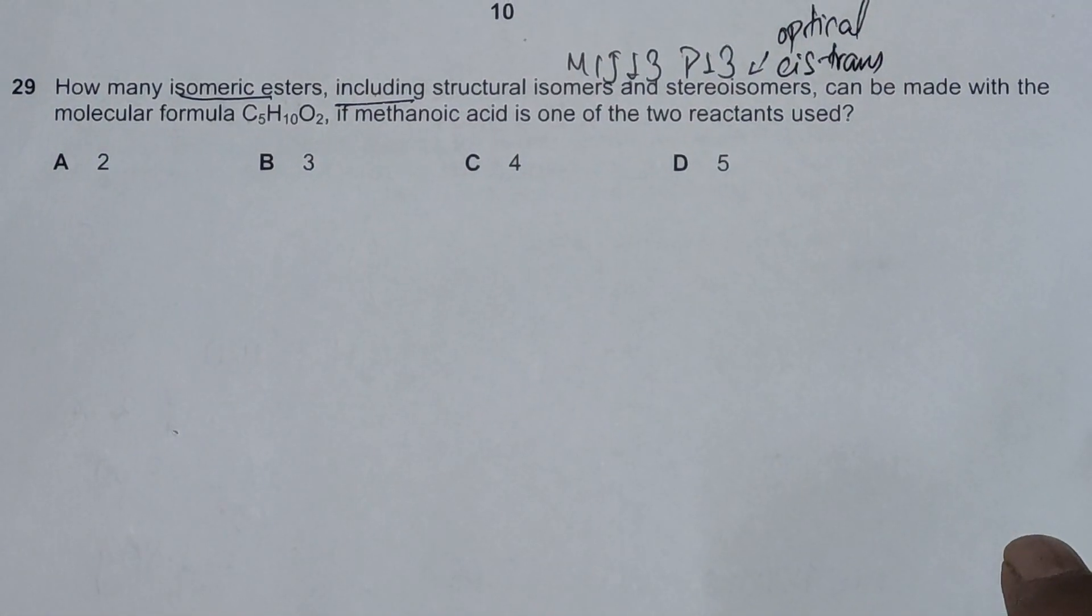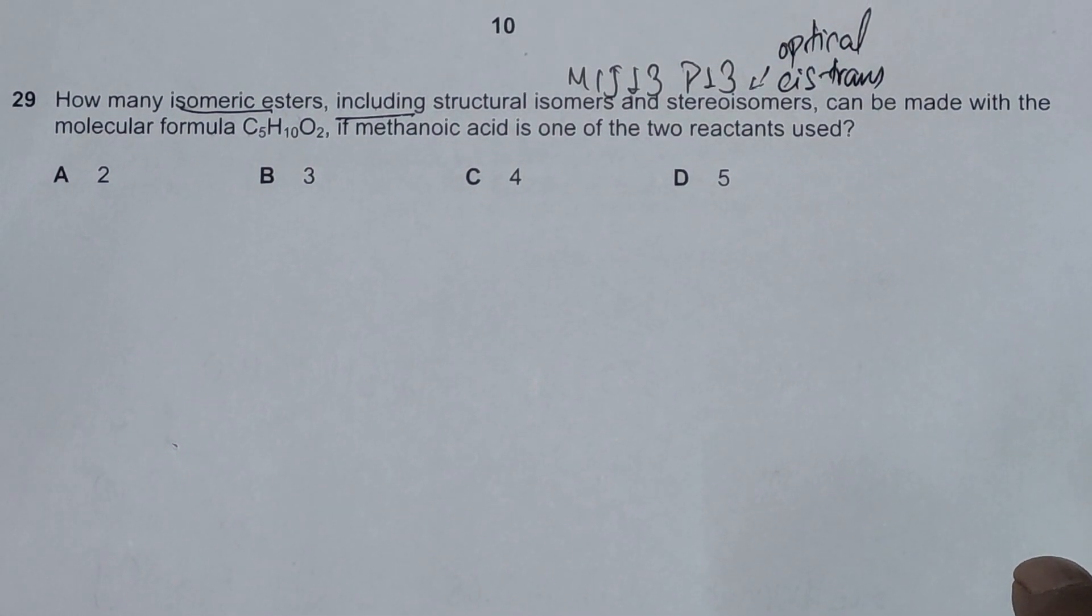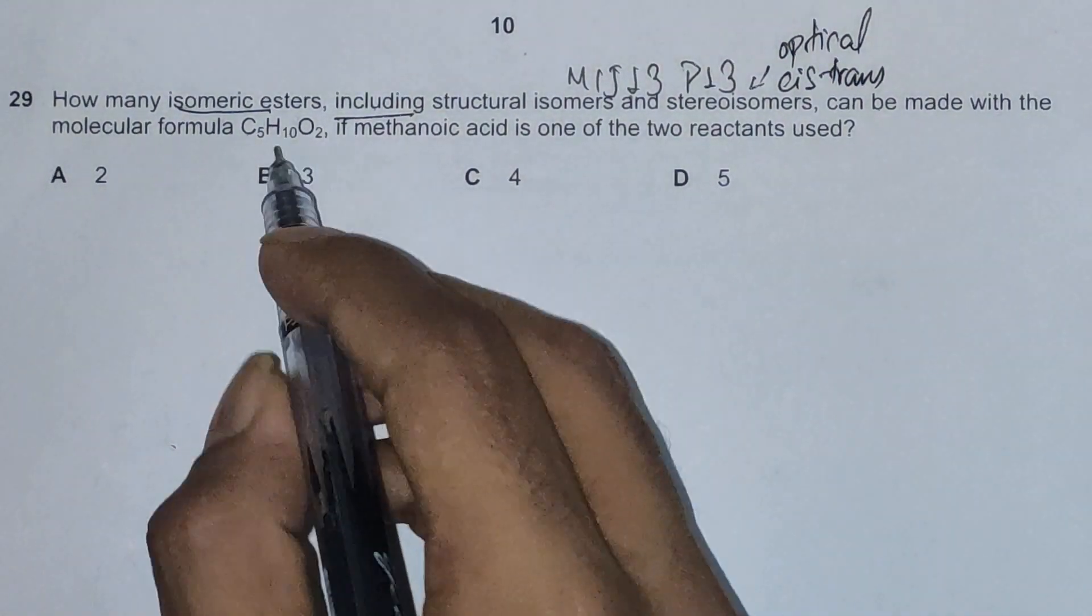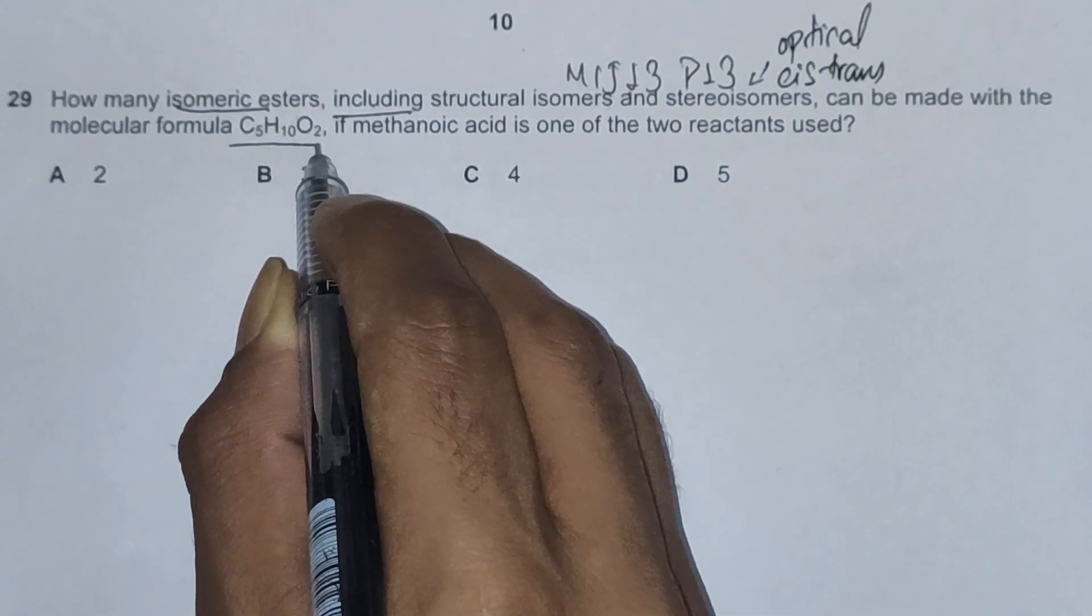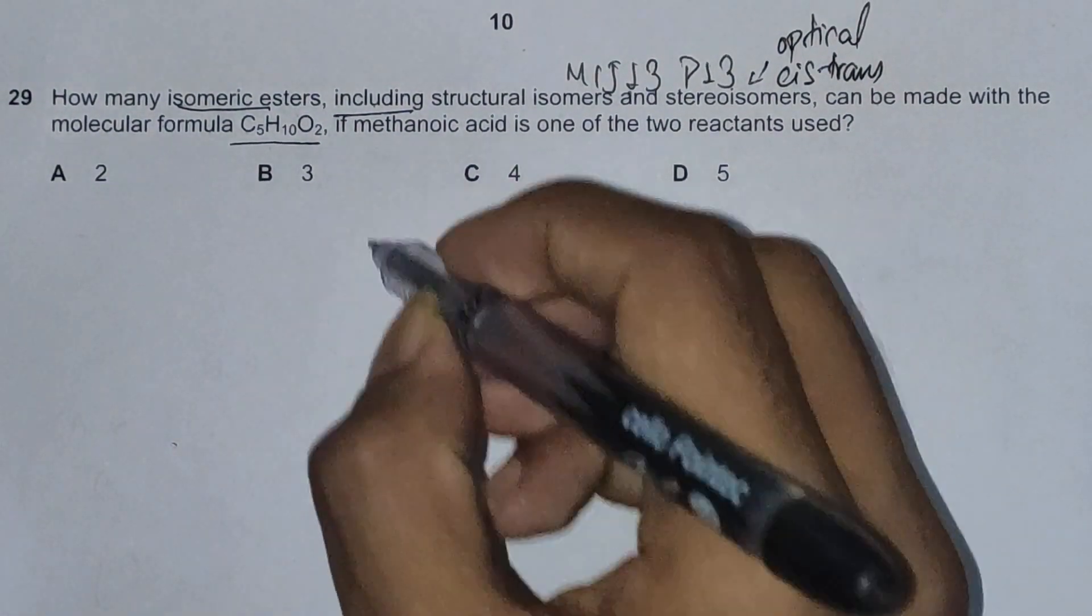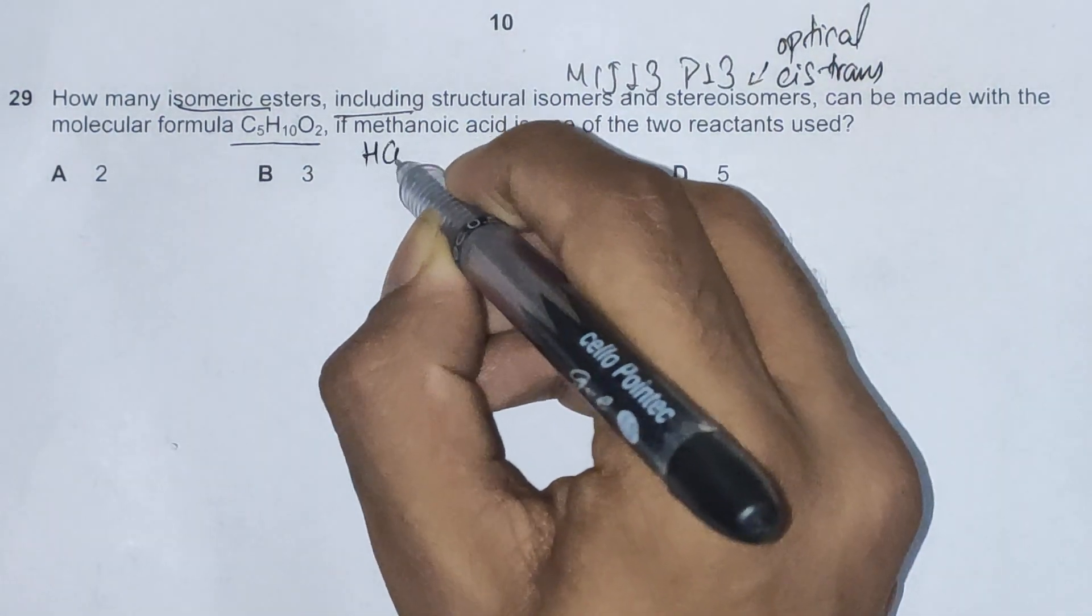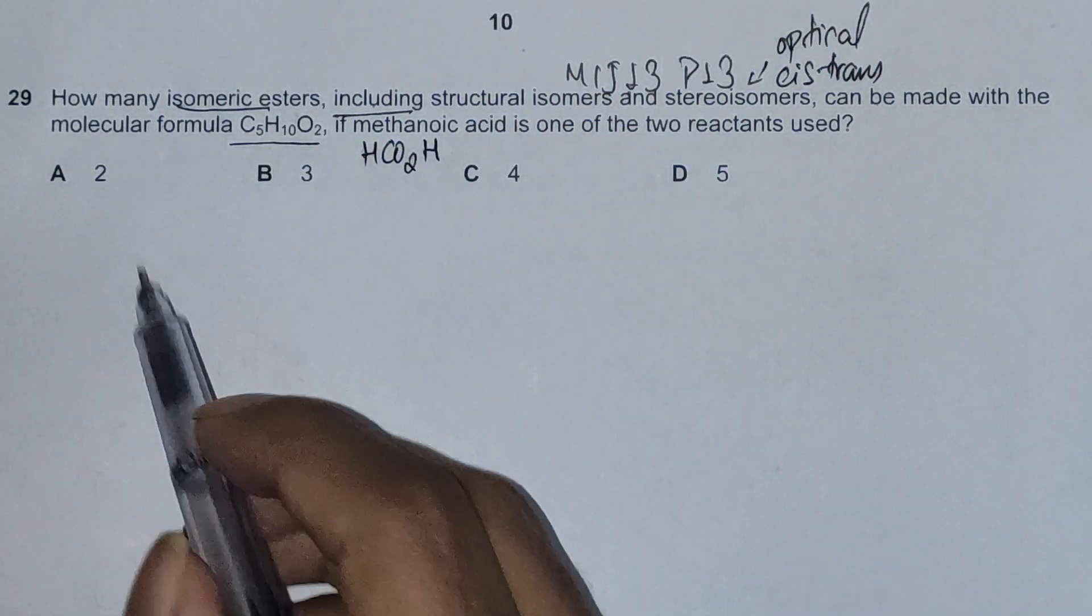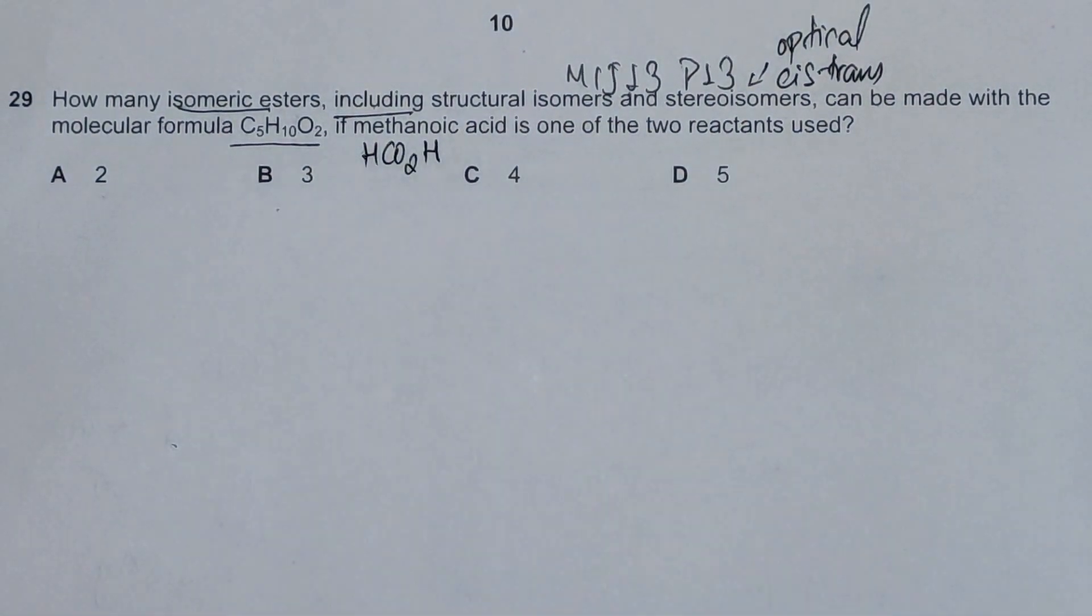Can be made with the molecular formula C5H10O2 if methanoic acid is one of the two reactants used? The molecular formula of methanoic acid is HCO2H. The options are 2, 3, 4, and 5.